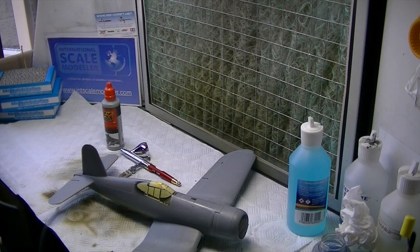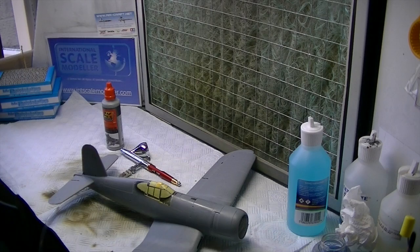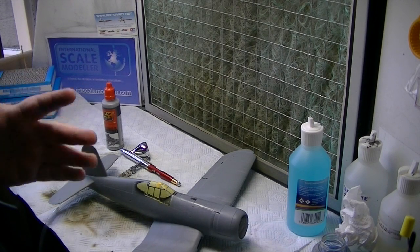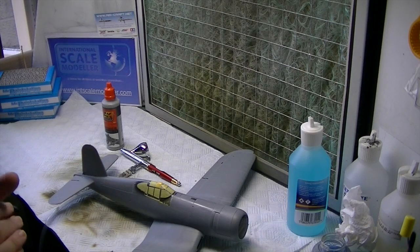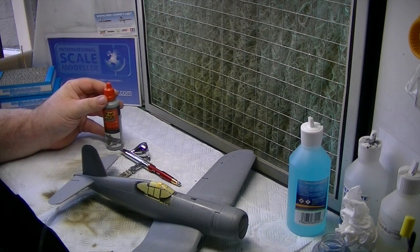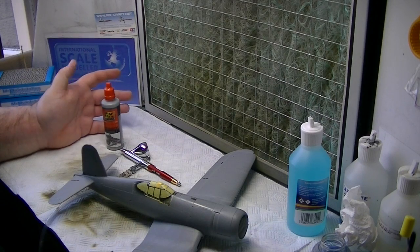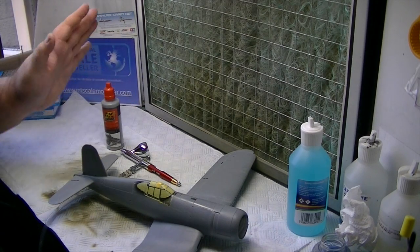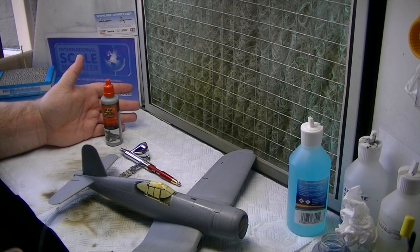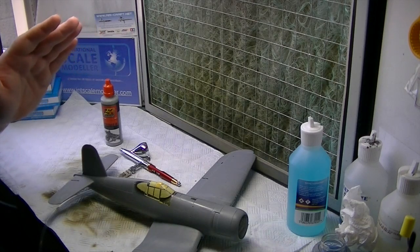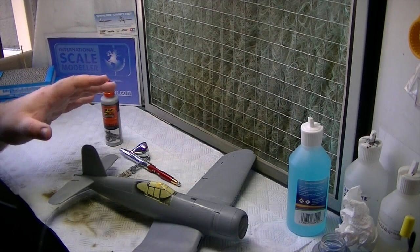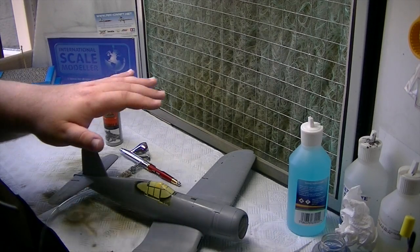Welcome to part 11 of our Tamiya 1/32 Corsair build. As you saw last time, we're all ready for primer and to get some paint down. Today we're going to get the primer on using AK Interactive Grey Primer. I'll be using my Harder Steenbeck Infinity CR Plus airbrush, and obviously we've got the Corsair here as well.